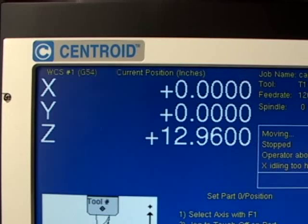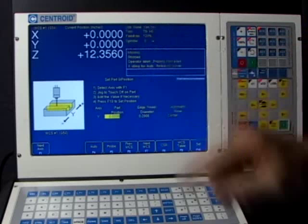There we go. We just got done zeroing out our X and Y zero position with the probe sitting in the center of the circular pocket.